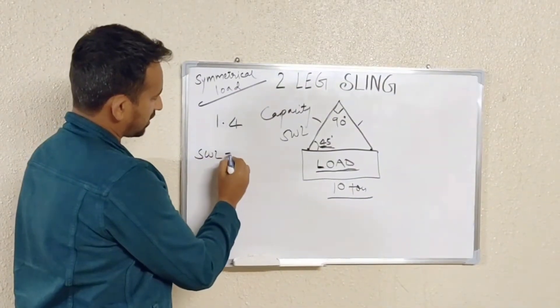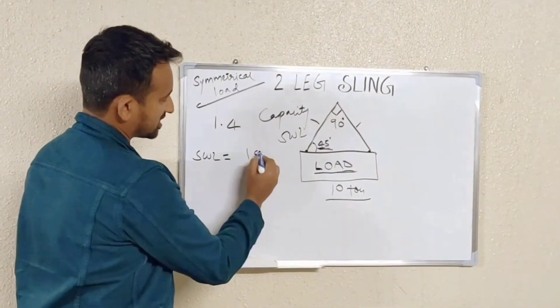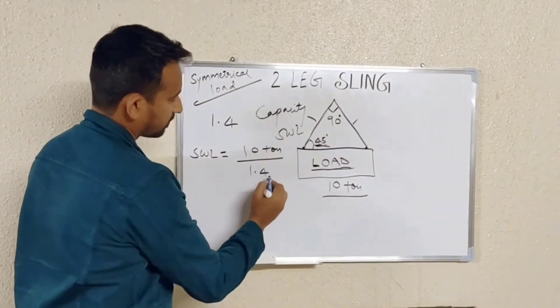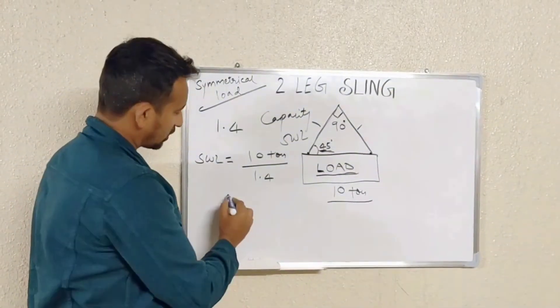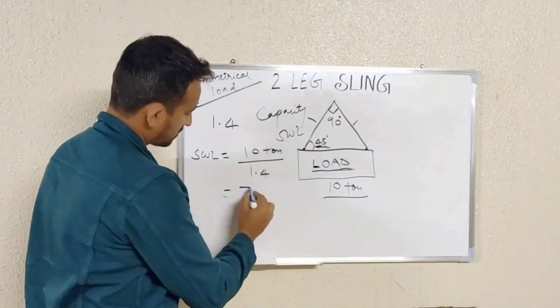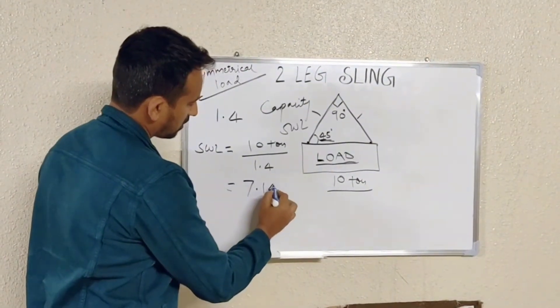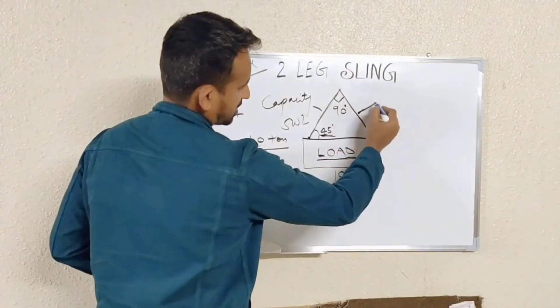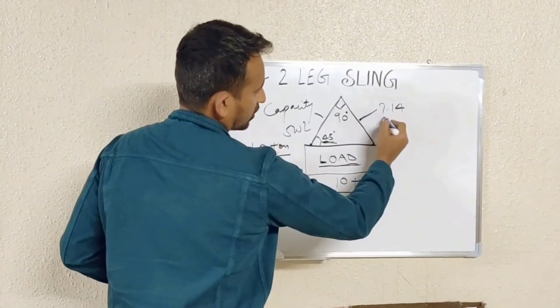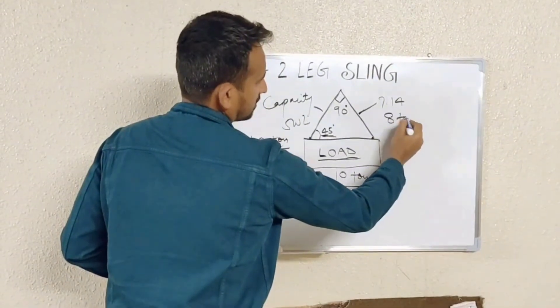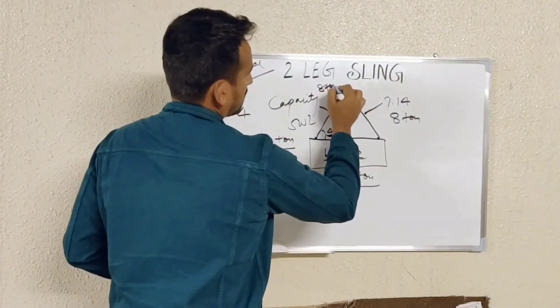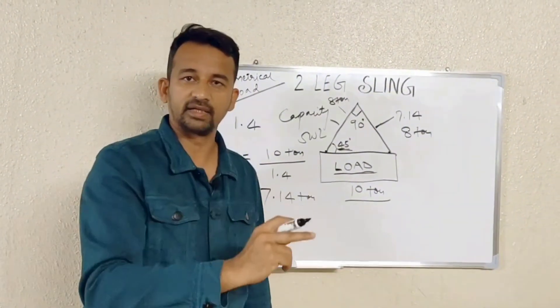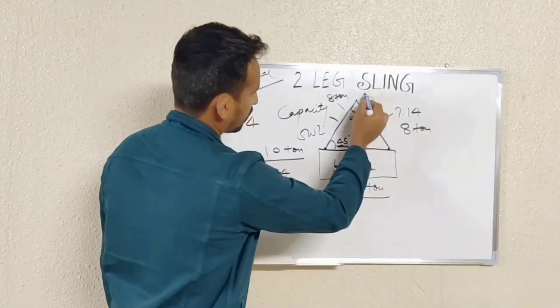So SWL for each leg will be load which is 10, 10 divided by 1.4. If you calculate it you will get the answer of 7.14. So your sling capacity for one leg will be 7.14, or say 8 ton. If you have two slings of SWL 8 ton, then you can lift 10 ton in this configuration.